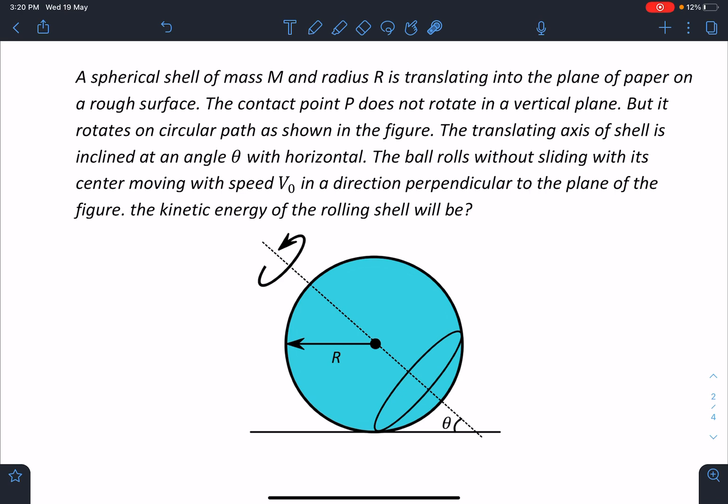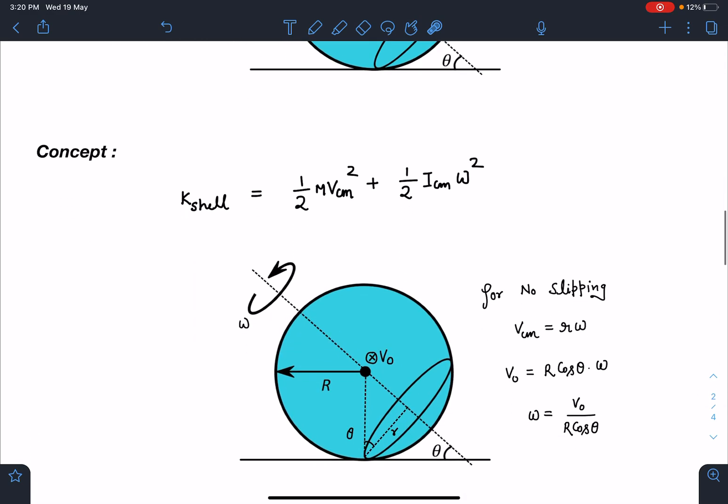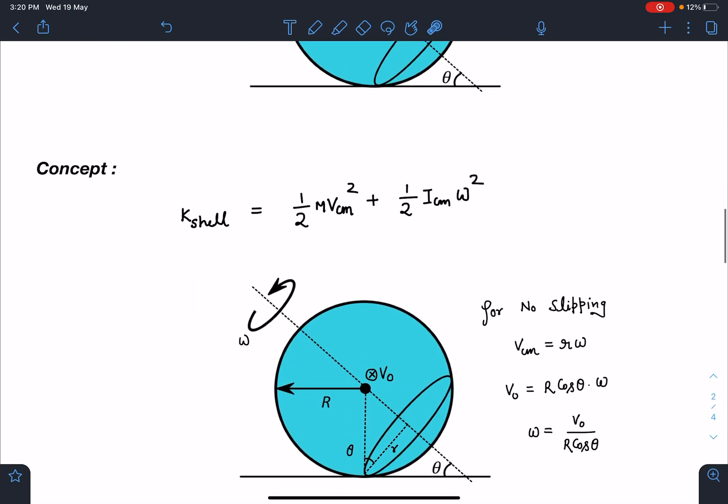This is a fairly straightforward problem. The kinetic energy for a rigid body in combined motion is K = ½Mv²_cm + ½I_cm·ω². Our entire job is to calculate the omega of this shell.